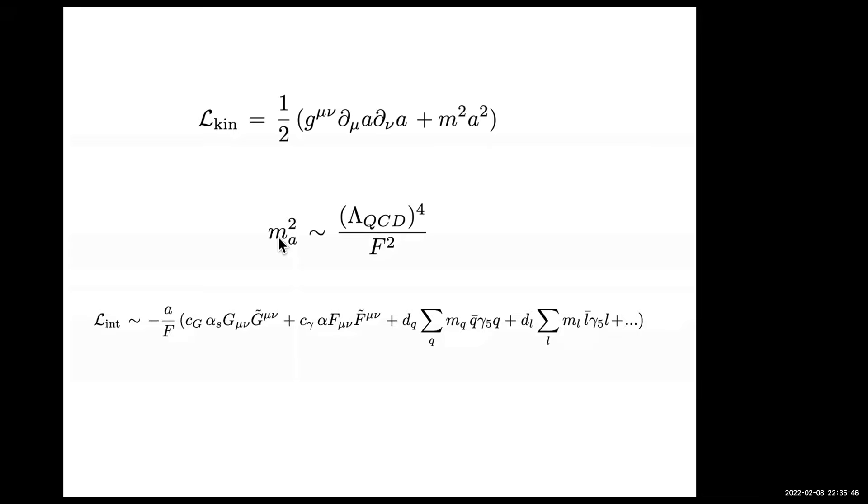Numerically, that's of the order of 100 MeV squared divided by F. F will be 10 to the 10th GeV or greater, so that will make the axion a very weakly coupled particle, a very light particle. We can write down the theory in terms of one basic parameter, F, which governs both the mass and the couplings. There are couplings to gauge fields and also couplings to leptons of a very specific form.